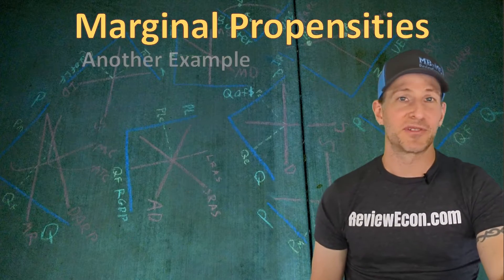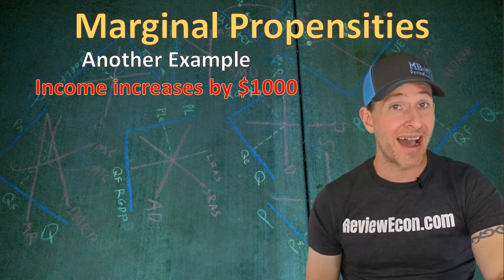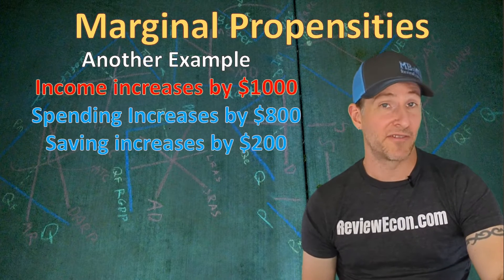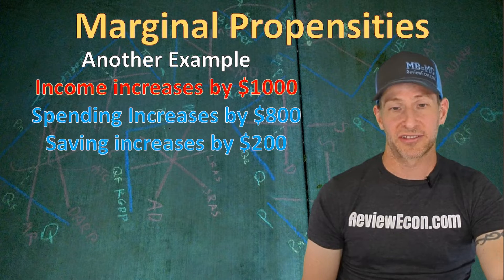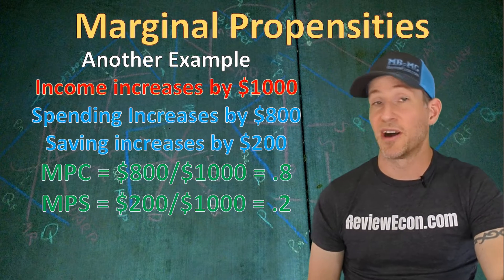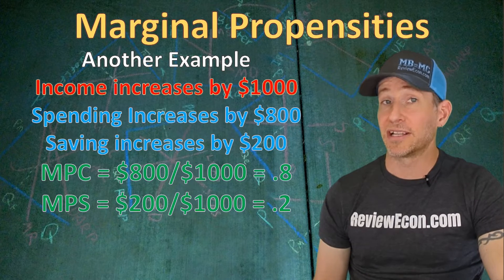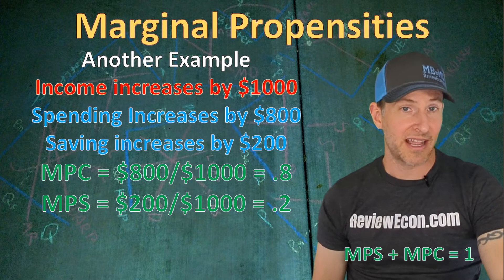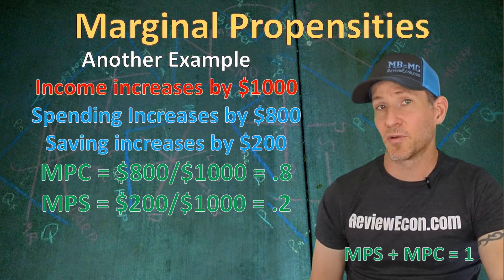Let's look at one more example to make sure we fully understand it. Let's say income increases by $1,000, and that increase in income leads to an increase in spending of $800 and an increase in savings of $200. Plugging in the numbers, you find a marginal propensity to consume of 0.8 and a marginal propensity to save of 0.2. Just like with the average propensities, the marginal propensity to save plus the marginal propensity to consume will equal 1.